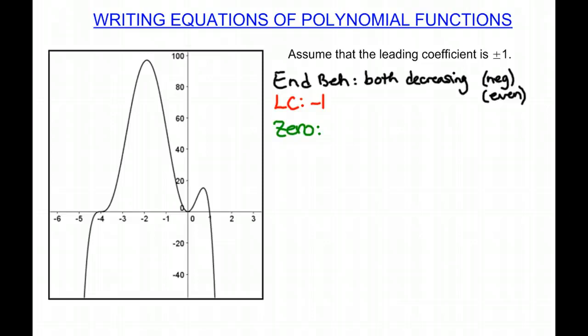So looking, we see one at negative 4, one at 0, and one at 1. Now negative 4, that is a cubic function, which means that it has multiplicity of 3. 0 bounces, it's a quadratic, so it has a multiplicity of 2. And 1 goes straight through, it's linear, so there's a multiplicity of 1.